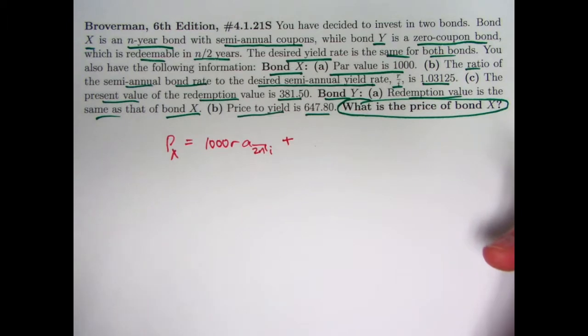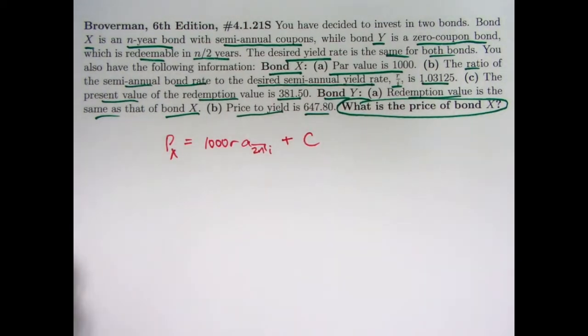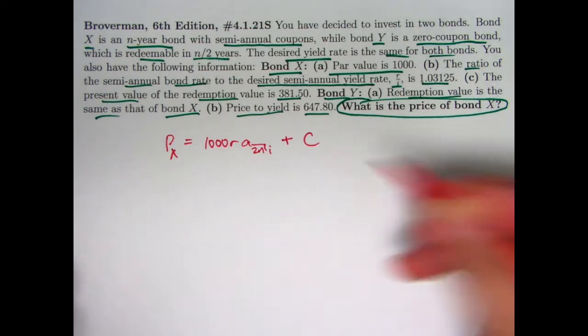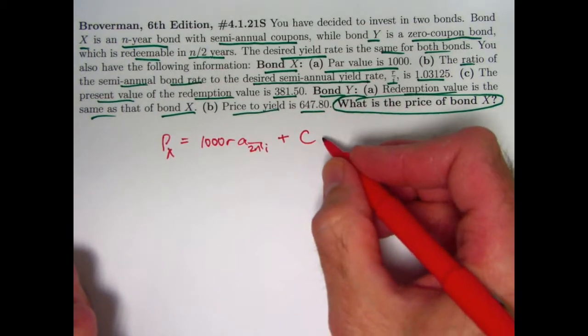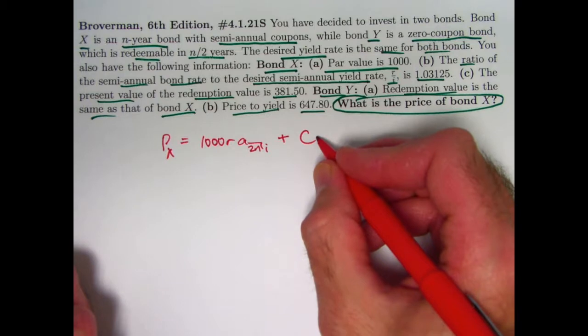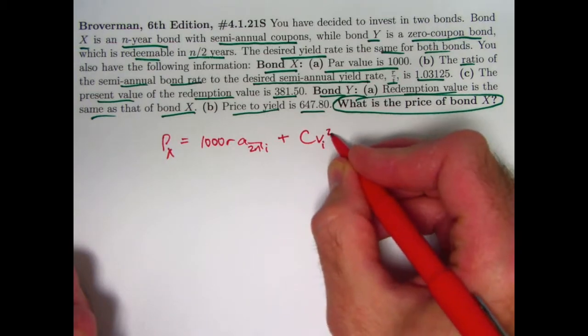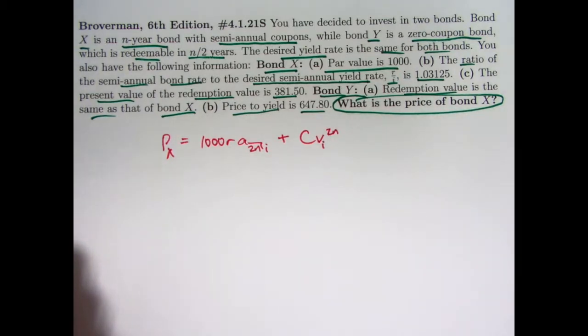We also would have the present value of the redemption value. Redemption amount, let's call it C. Again, that's not necessarily 1,000. It gets multiplied by V sub I raised to the 2N power. Once again, it's an N-year bond with semi-annual coupons, so we have 2N half-year periods.